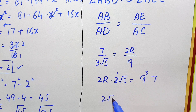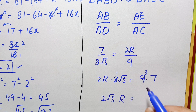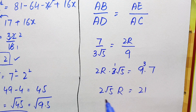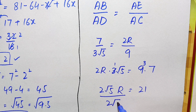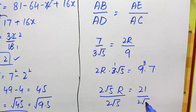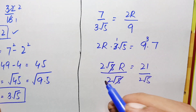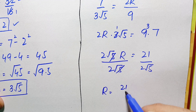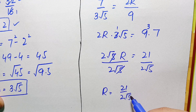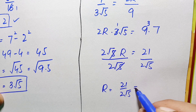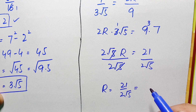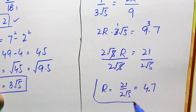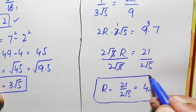Simplifying: 2r × 3√5 = 63. Dividing both sides by 2√5: 6r√5 = 63, so r = 63 / (6√5) = 21 / (2√5). This is the exact value of r. If we further simplify this fraction numerically, it gives approximately 4.7. So the final answer is r ≈ 4.7.